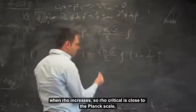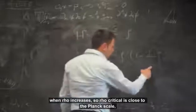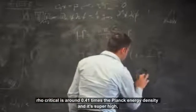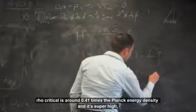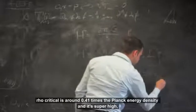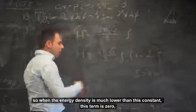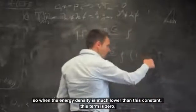When rho increases, rho critical is close to the Planck scale. Rho critical is around 0.41 times the Planck energy density, and it's super high. So when the energy density is much lower than this constant,